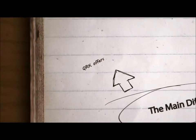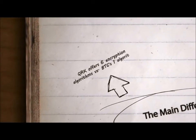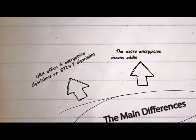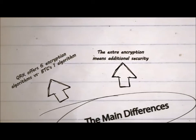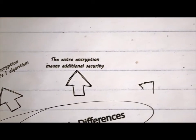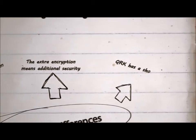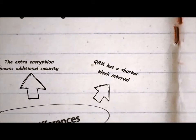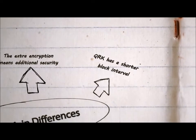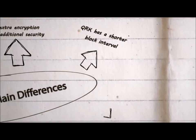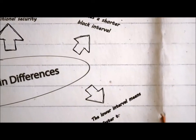QuarkCoin offers six encryption algorithms compared to Bitcoin, which only offers one. This extra encryption means extra security. QuarkCoin also has a shorter block interval, and this lower interval means faster transactions.